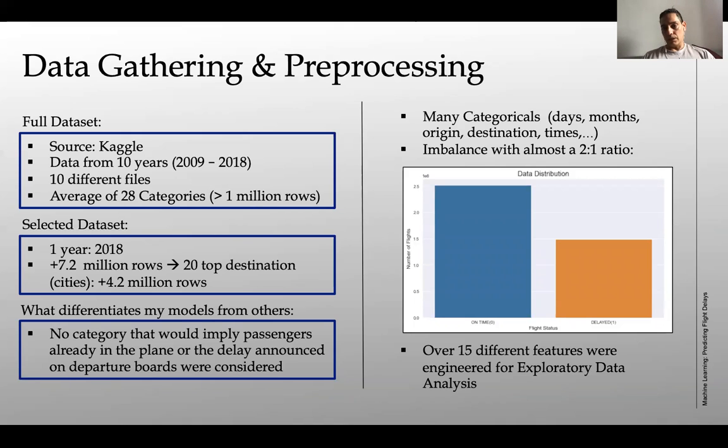This data set had a lot of categoricals, as you can imagine, such as the day, month, origin, destinations, and anything that is related to time. It's an imbalanced data set. This is a binary classification problem. As you can see on the plot, on one side you have on time, which is going to be a zero, and then flights arriving delayed, which is going to be a one, and that's almost a two to one ratio, so severely imbalanced.